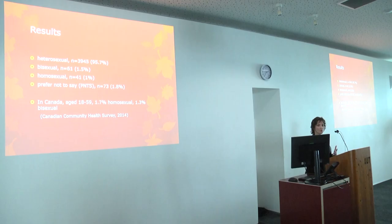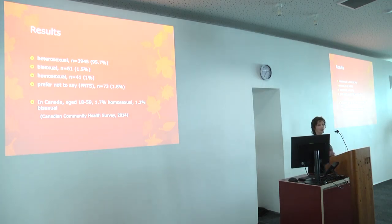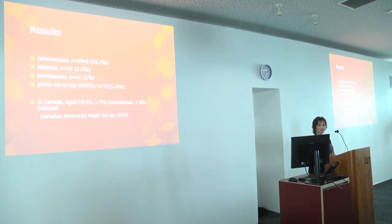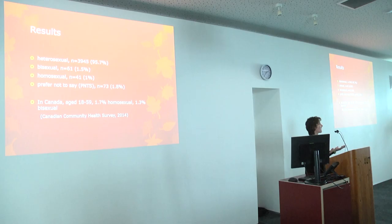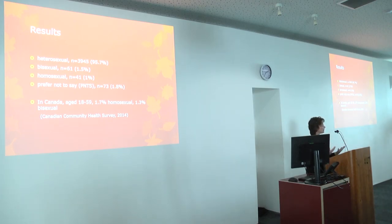These are the results. With the groupings, as one would expect, the majority — almost 96% — identified as heterosexual. 1.5% identified as bisexual, 1% identified as homosexual, and 1.8% identified as prefer not to say. In Canada, looking at a similar age group, very similar findings were observed in terms of sexual orientation. What we found in the Quinte is very representative of what we see within Canada, and the data collected in the Quinte area of Ontario is representative of what Canada looks like based on census data.